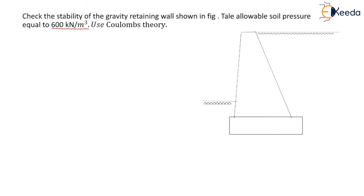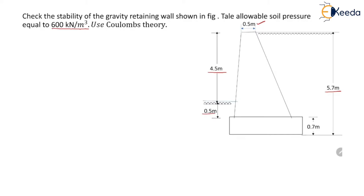Let us first see the dimensions of the retaining wall. The top width of the retaining wall is 0.5 meter. The overall height of the retaining wall is 5.7 meter. The height of the retaining wall above ground level is 4.5 meter, and the base slab is laid at a depth of 0.5 meter from the ground surface. The total thickness of the base slab or foundation is 0.7 meter. The back of the retaining wall is inclined at an angle beta equal to 70 degrees. The distance of the retaining wall from the toe is 0.4 meter, and the distance of the back of the wall from the heel is 0.5 meter.